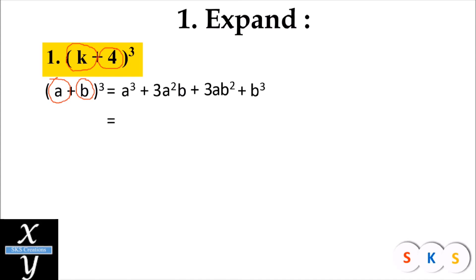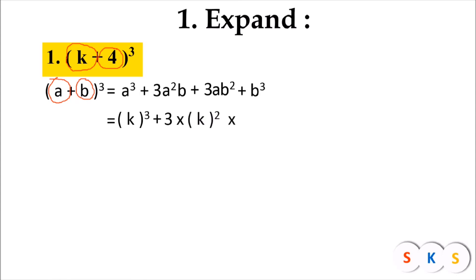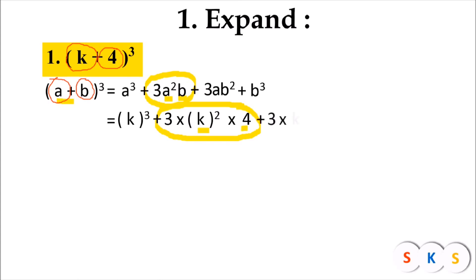So we will get a raised to 3, that is k the whole raised to 3, plus 3 into a squared — a is k — so k squared into b, that is 4. I have substituted the value of a and b. This is 3a squared b. At the place of a we have k and at the place of b we have 4. Plus 3 into a, that is k, into b squared, that is 4 squared, plus 4 raised to 3.